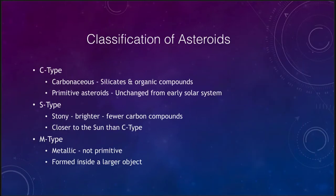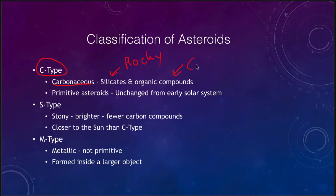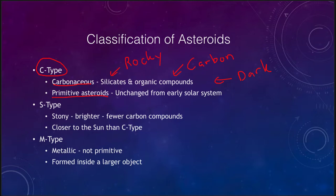How can we classify asteroids? We have the C-type asteroids, which are what we call carbonaceous. These are made up of silicates or rocky material and organic compounds — and recall that organic compounds does not mean life; it simply means carbon compounds. Carbon compounds tend to be sooty, so these are relatively dark objects and harder to find because they're not reflecting a lot of light. These are important because they are primitive, meaning they have not changed since they formed billions of years ago when the solar system was forming.